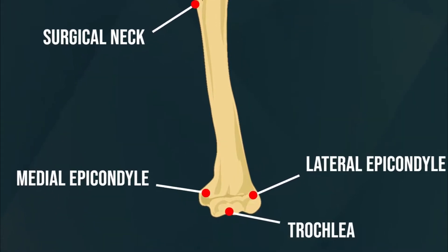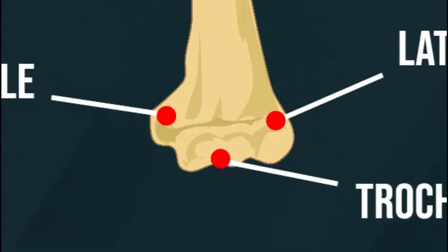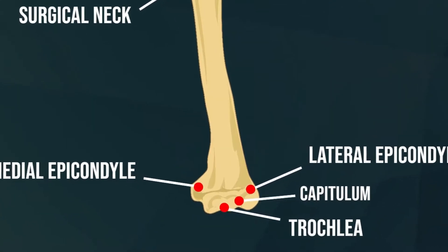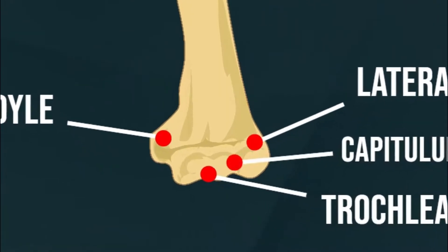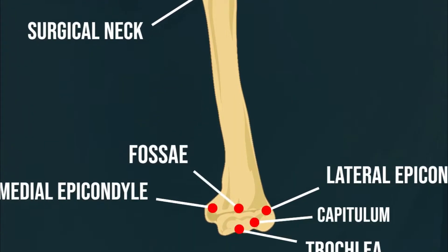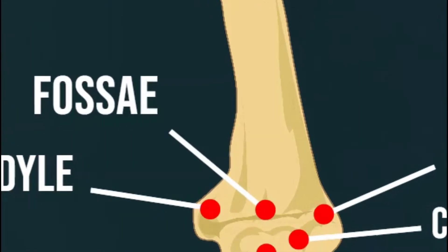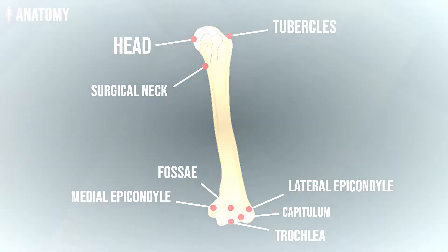Trochlea: This part interacts with the ulna bone in the lower arm. Capitulum: It is one of the parts of the bone and interacts with the radius bone from the bottom of the arm. Fossae: These are depressions that help accommodate the bones of the lower arm when moving the elbow joint. The body has three fossae.